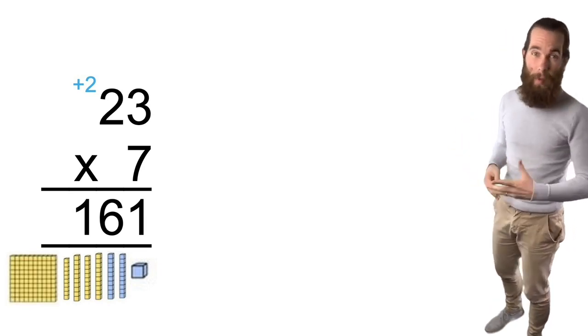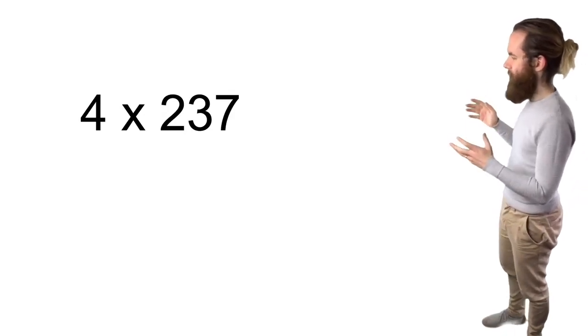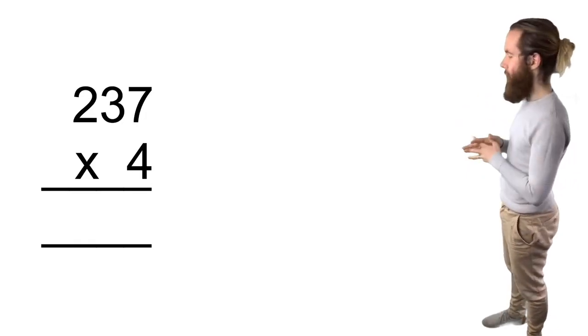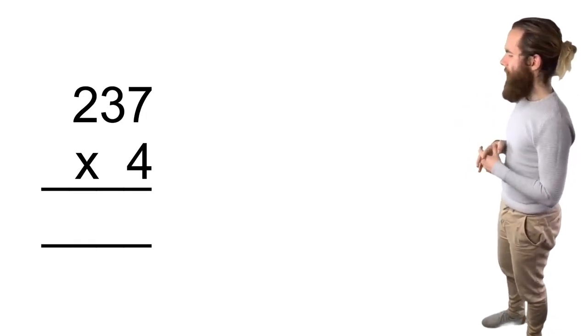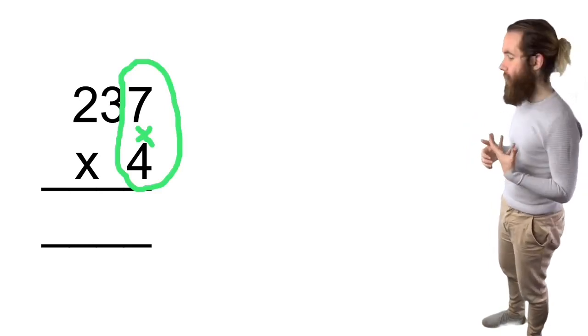Let's try another one now without the MAB blocks. So we've got four times 237. Let's start by laying them out. So I'll put the four underneath the 237 and then we're going to work it out from right to left. So starting the units column.